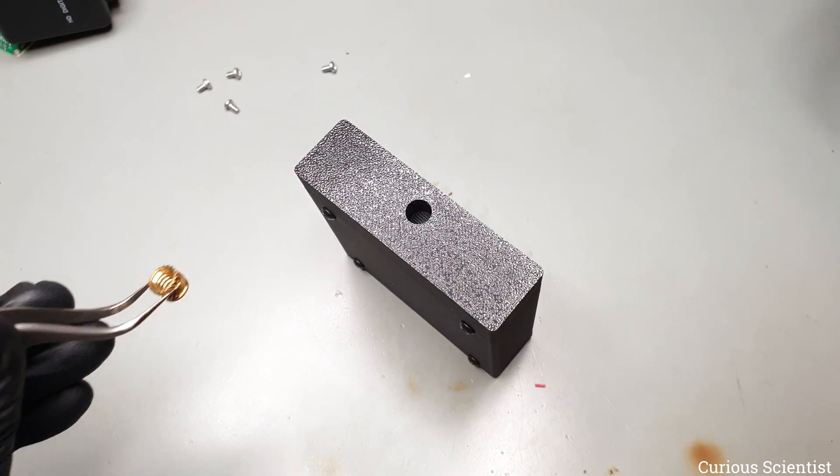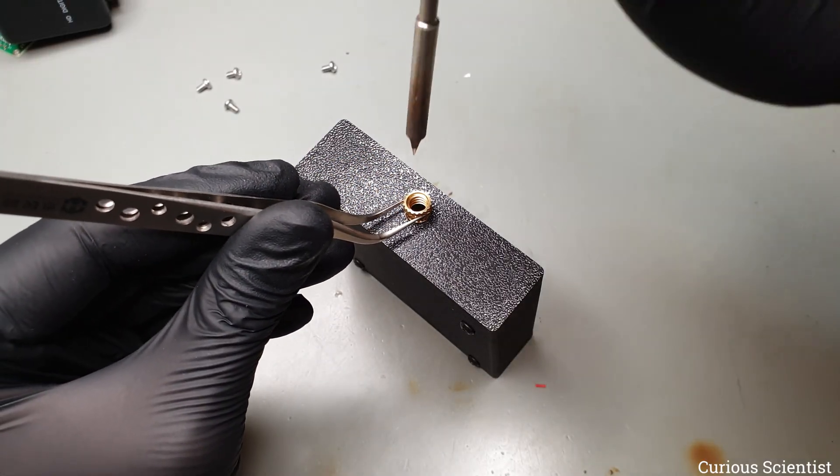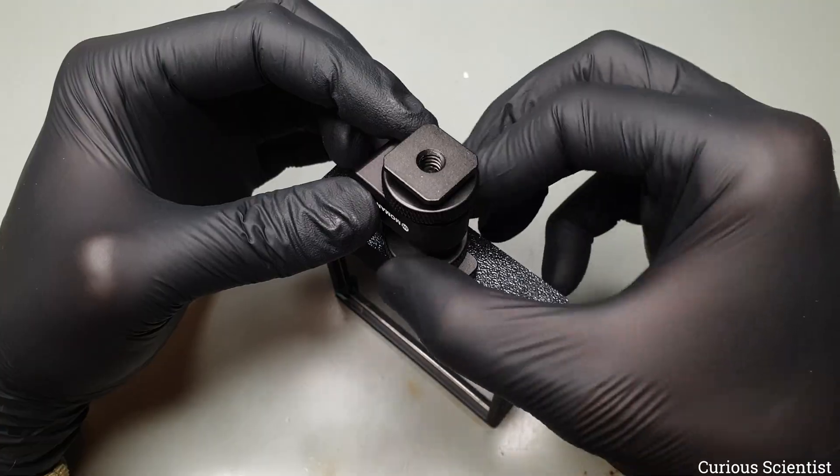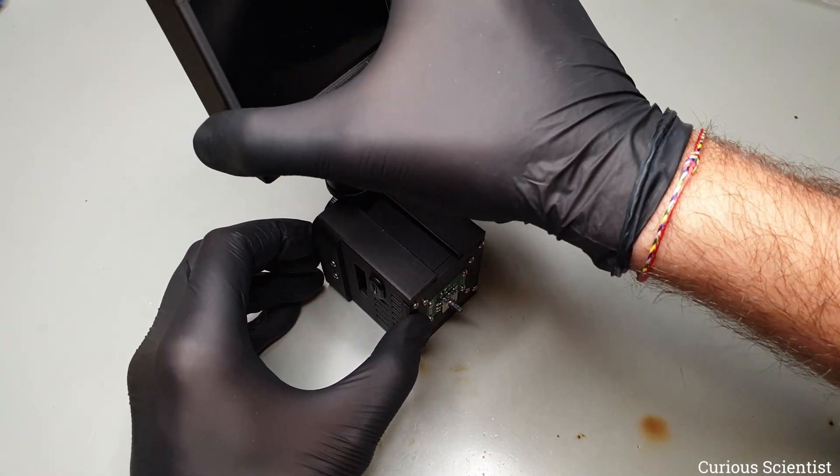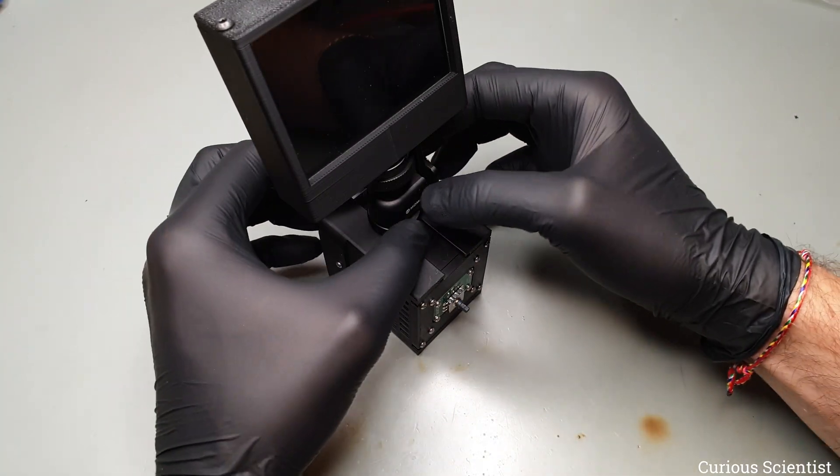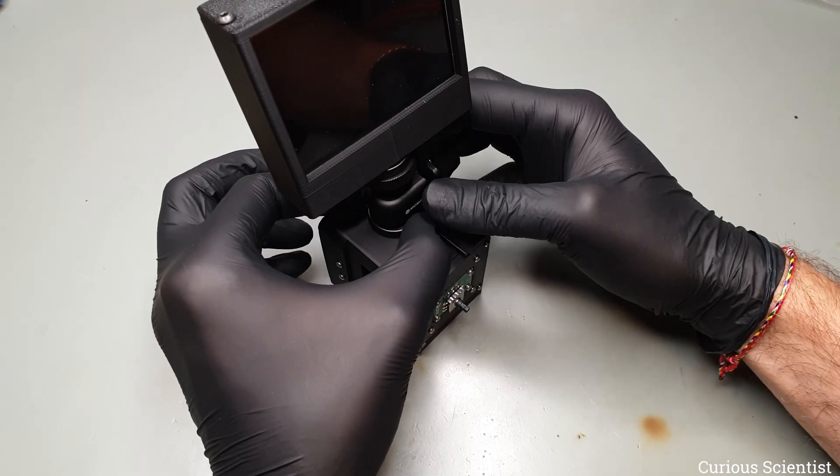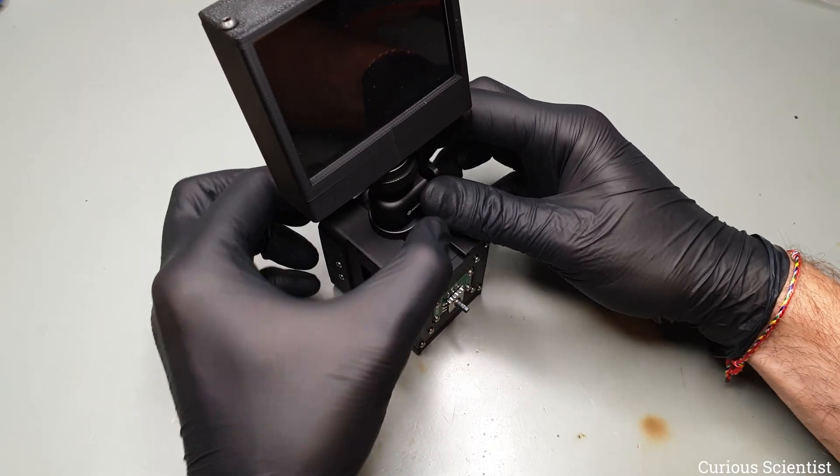The module's enclosure has a 1/4 inch brass insert nut in its bottom, which is attached to a cold shoe screw adapter. The monitor can be tilted, which allows us to optimize the monitor's view angle. The assembled monitor has a relatively compact footprint, and its HDMI and USB ports are easily accessible.